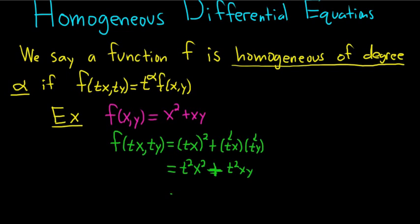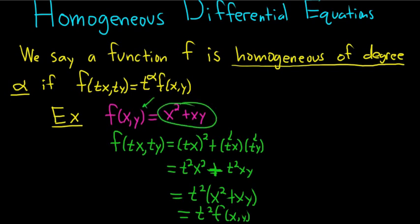And so now we can pull out a t squared, x squared plus xy. But this is the beautiful part. This is t squared, and then this piece here is simply f of x, y. So that's what we started with. So this is homogeneous, and the degree is 2.